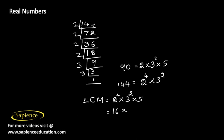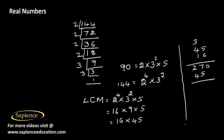2⁴ is 16, 3² is 9, times 5. So we need to find the value of 16 × 9 × 5.